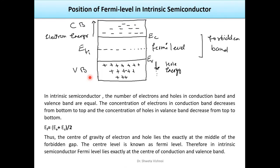In intrinsic semiconductor, the Fermi Level lies exactly at the center of the conduction and valence band — just in the middle of the energy gap. In the band diagram, we draw the conduction band at the top, the valence band at the bottom, and the forbidden band in between. The dotted line in the middle represents the Fermi Level, which is exactly at the midpoint between EV and EC.